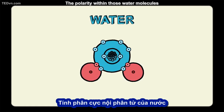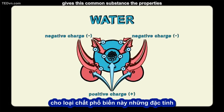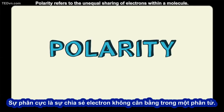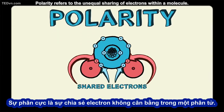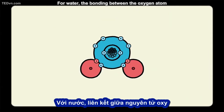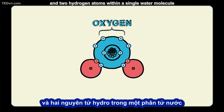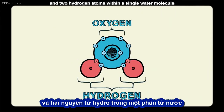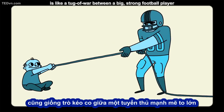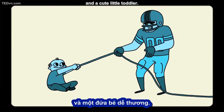The polarity within those water molecules gives this common substance the properties that make it unique and life-sustaining. Polarity refers to the unequal sharing of electrons within a molecule. For water, the bonding between the oxygen atom and two hydrogen atoms within a single water molecule is like a tug of war between a big strong football player and a cute little toddler.